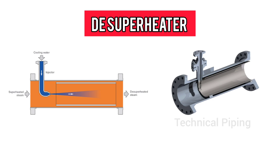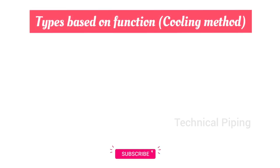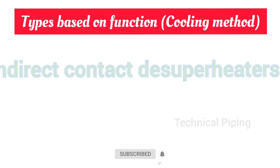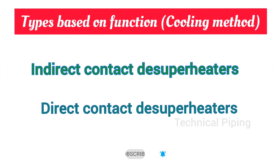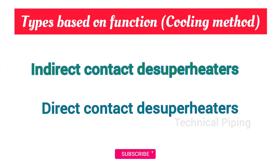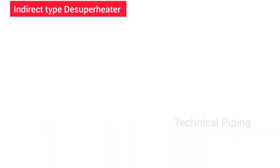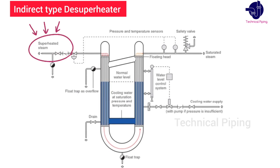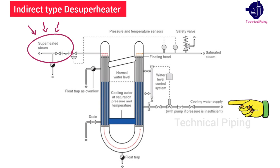The equipment that does this work is called a desuperheater. A desuperheater uses one of two general methods: number one, indirect contact type; number two, direct contact type. In the indirect contact type, a shell-and-tube heat exchanger is used — the superheated steam is passed through the tubes, and the shell contains the cooling medium such as water.